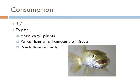Consumption is when one organism eats another. When animals eat plants, it's known as herbivory. When animals eat other animals, it's known as predation. But when only small amounts of tissues are consumed, allowing the host to live, this is known as parasitism.